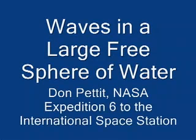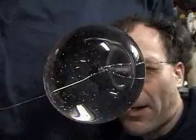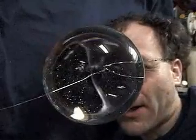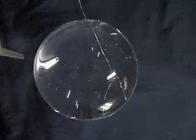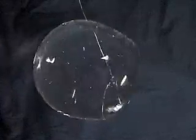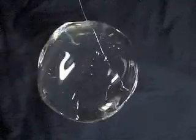Waves in a large free sphere of water. Here we have a large free sphere of water about the size of my head, 130 millimeters in diameter, and we put a puff of air, 10 cc's in 100 milliseconds, radially directed in from the side and look at the resulting waves.